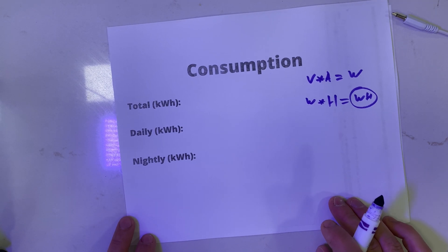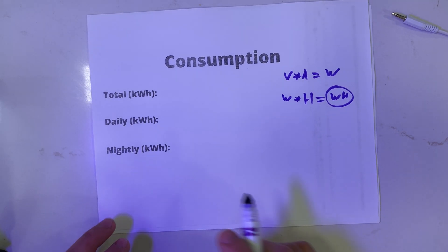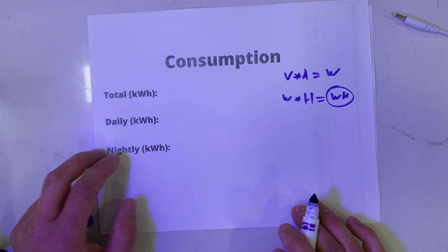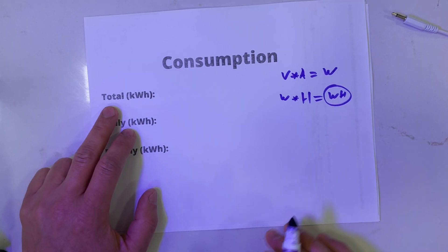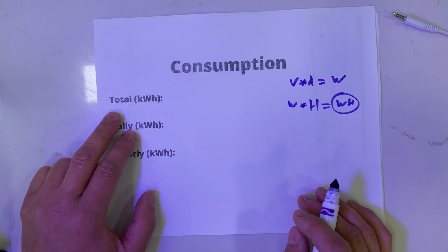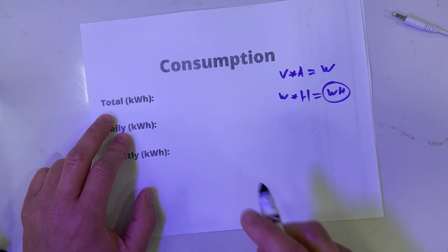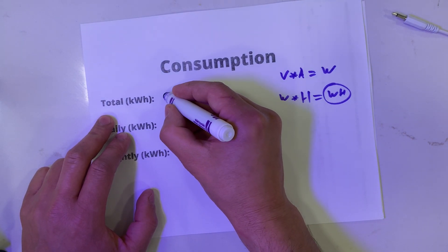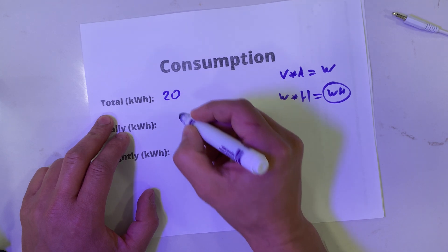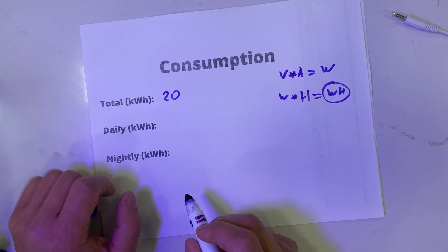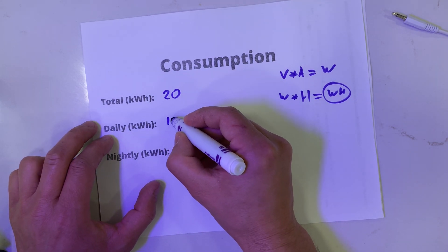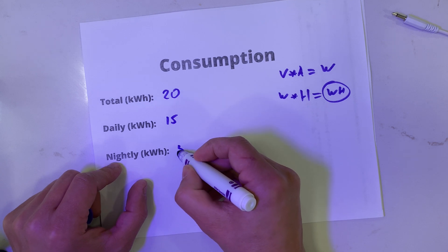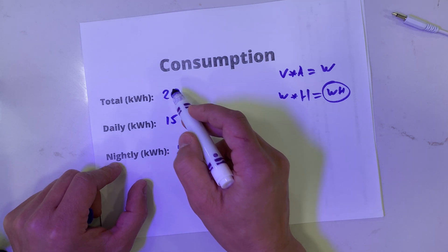Now let's use an example where our total consumption in one day is 20 kilowatt hours — 15 kilowatt hours during the day and 5 kilowatt hours at night, for a total of 20. We'll use this number to calculate how large our battery bank should be.